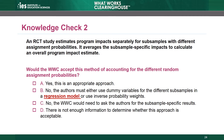Knowledge Check 2. A study estimates program impacts separately for subsamples with different assignment probabilities and averages the subsample's specific impacts to calculate an overall program impact estimate. Would the WWC accept this method of accounting for the different random assignment probabilities? Choice A: Yes, this is appropriate. Choice B: No, the authors must either use dummy variables for the different subsamples in a regression model or use inverse probability weights. Choice C: No, the WWC would need to ask the authors for subsample-specific results.